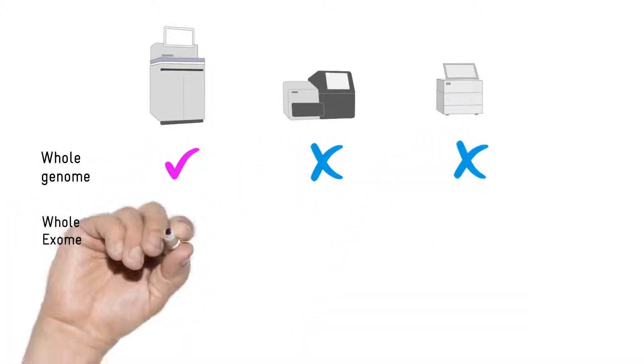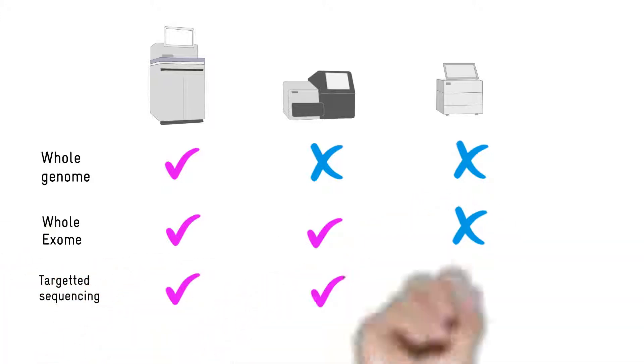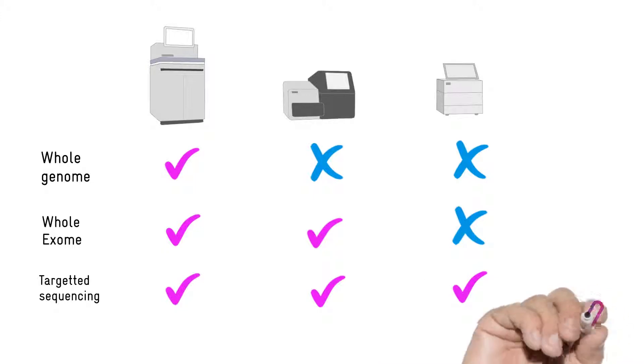Targeted sequencing allows you to produce data for a smaller number of genes, but for a far larger number of samples at a time. Even an entry-level NGS machine can sequence the data for multiple genes for hundreds of samples at a time.